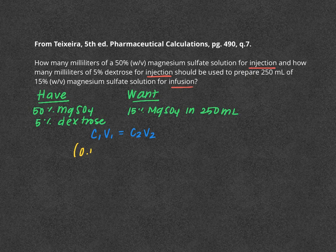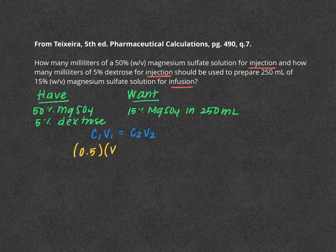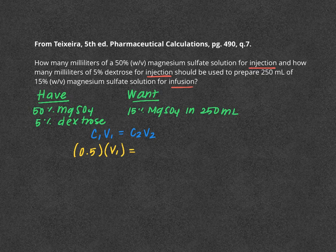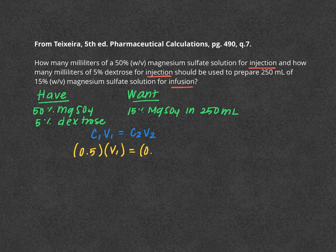So 0.5, again, that represents our 50% magnesium sulfate, times V1, because that's what we're looking for. We want to know how much of that particular concentration will contribute to the final outcome. And we already have our concentration of our final product as well as the volume.